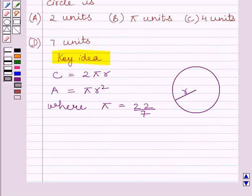Let us now start with the solution. First of all, let us suppose that the radius of a circle is R units.